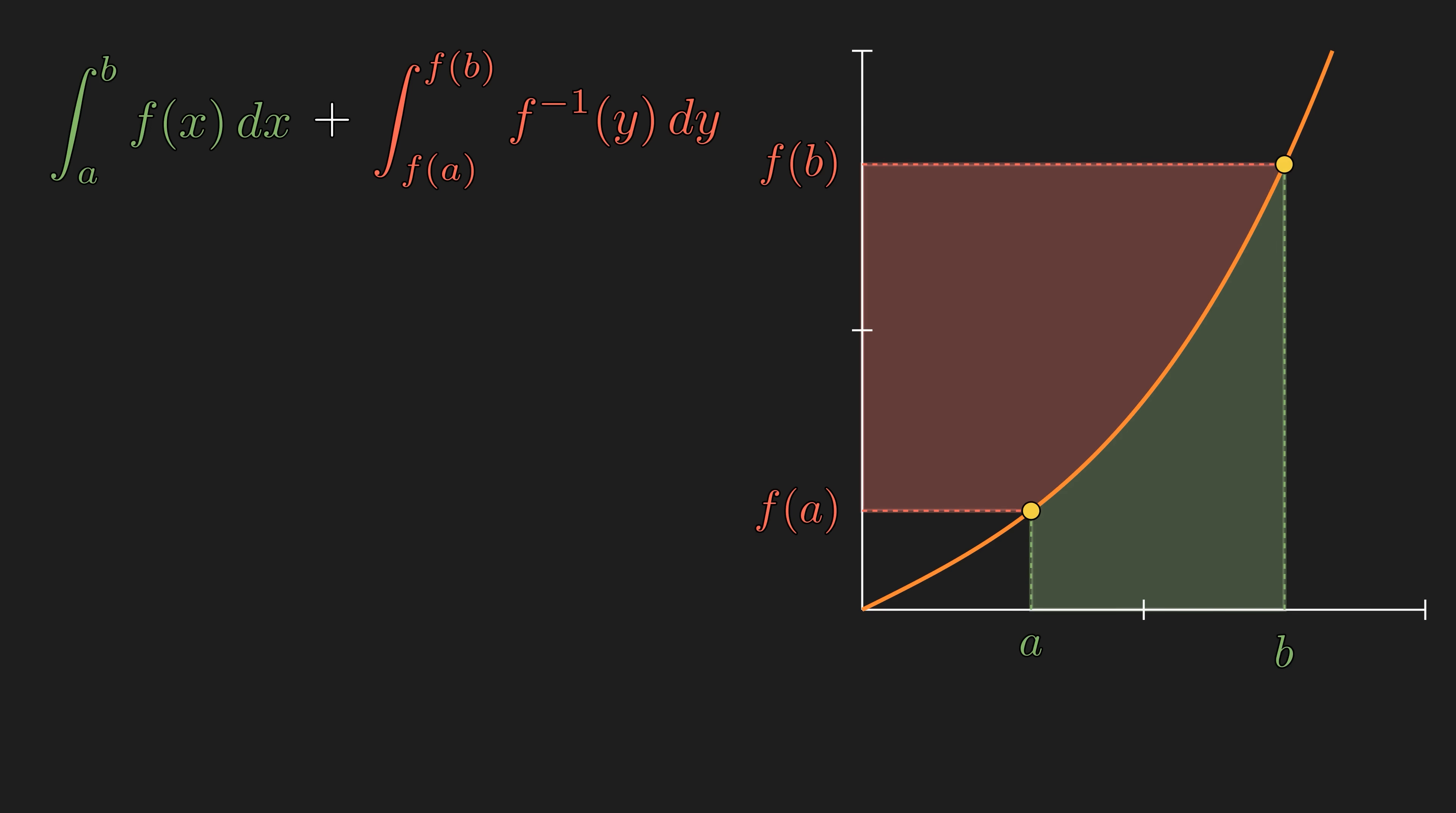Now, once we add these two areas together, the region is a big rectangle minus the little rectangle. So, the area is equal to f b times b minus f a times a.